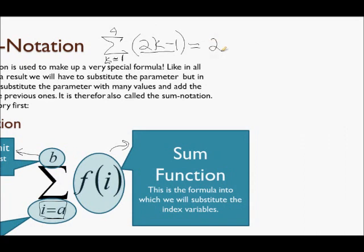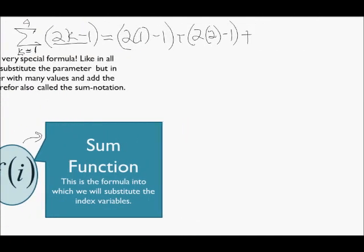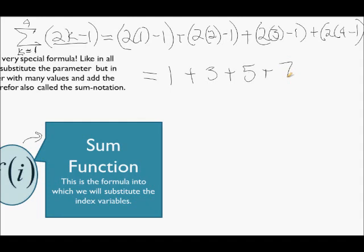So we start with 1. So 2 times 1 minus 1 plus 2 times, now k jumps in 1 to the next value which is 2 minus 1 plus. Now the next value k assumes is 3. So we go from 1, 2, 3 and 4. So 2 times 3 minus 1 plus and the final one 2 times 4 minus 1. And there we go if we add up all of those: 2 times 1 is 2 minus 1 is 1 plus, 2 times 2 is 4 minus 1 is 3 plus, 2 times 3 is 6 minus 1 is 5 and the last one will be 7. And this if we add them up all together we get 16. So in other words the value of this sum expression is equal to 16.